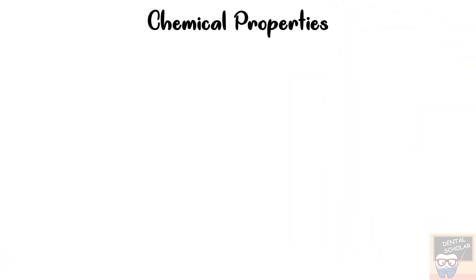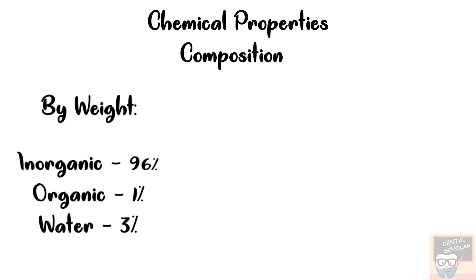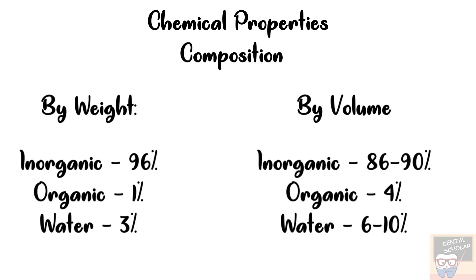Let's now go to the chemical properties. Let me first describe the composition of enamel. By weight, enamel is composed of 96% inorganic material, 1% organic material and about 3% water. By volume, enamel is composed of about 86-90% inorganic, 4% organic and 6-10% water.